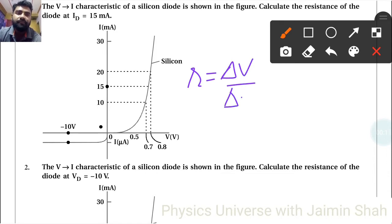So change in voltage here, change in voltage 0.8 minus 0.7 for forward characteristic, upon change in current. So that is 0.8, 20 minus 0.7, 10.